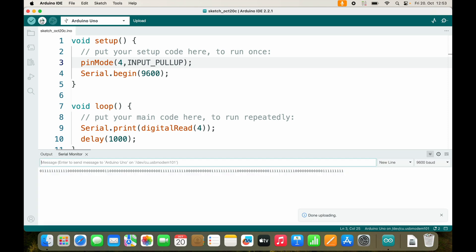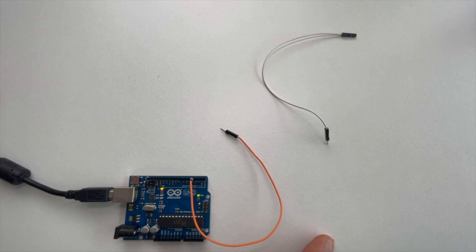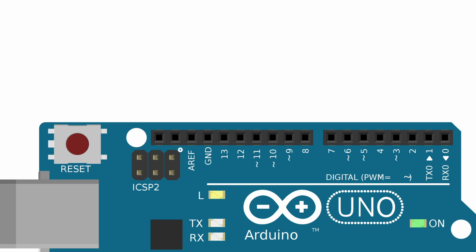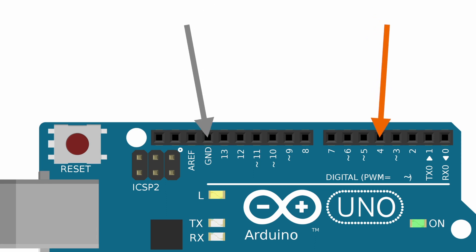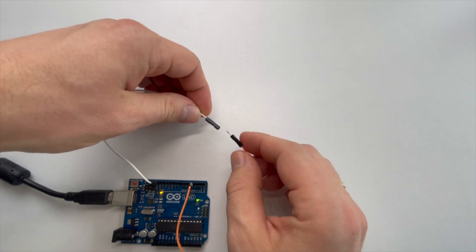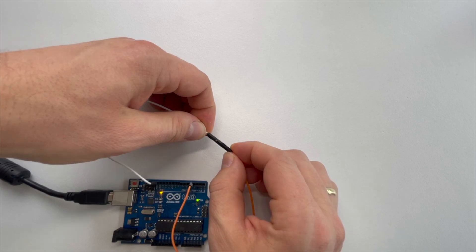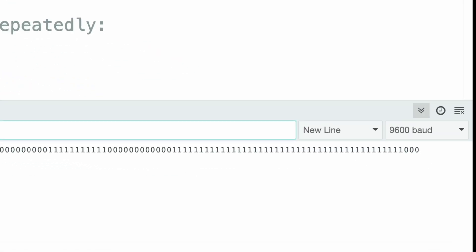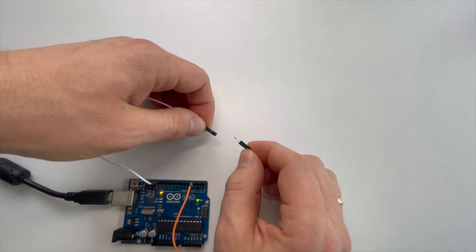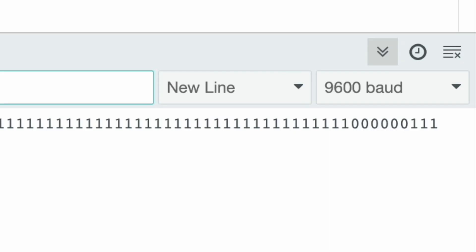Now if we upload the code again, Arduino will always report one. As you see, I already connected one cable to pin 4, and in order to make the button complete, I will connect another cable to the ground pin to zero volts. And now if I connect these two wires we will get zero, and if I open them we will get one.